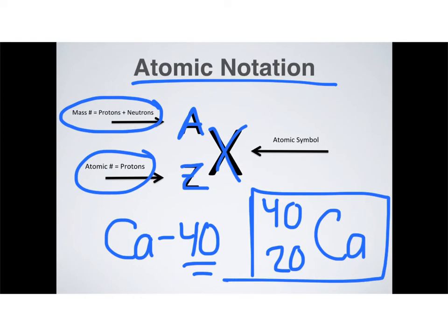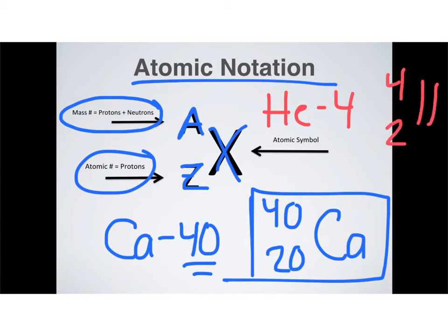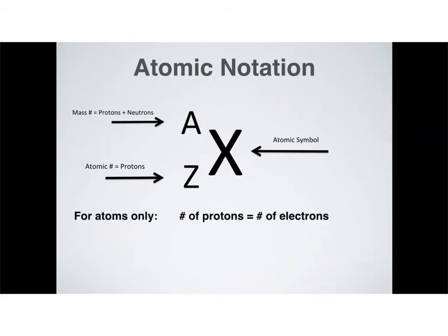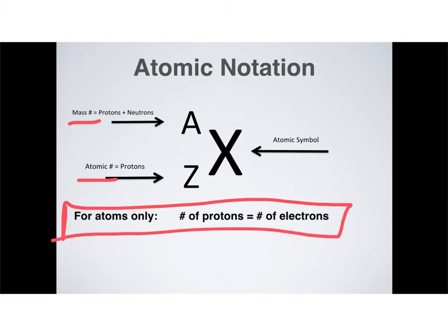For helium-4: the mass number 4 goes at the top, 2 is the atomic number of helium, and the symbol is He — that's our atomic notation for helium-4. We can get a lot of information from atomic notation: from the mass number we can find protons and neutrons; from atomic number we can find protons; and we have the atomic symbol. The only piece of information missing has to do with electrons, but for atoms, the number of protons and electrons is the same. So whatever Z is, that tells you both your protons and your electrons.